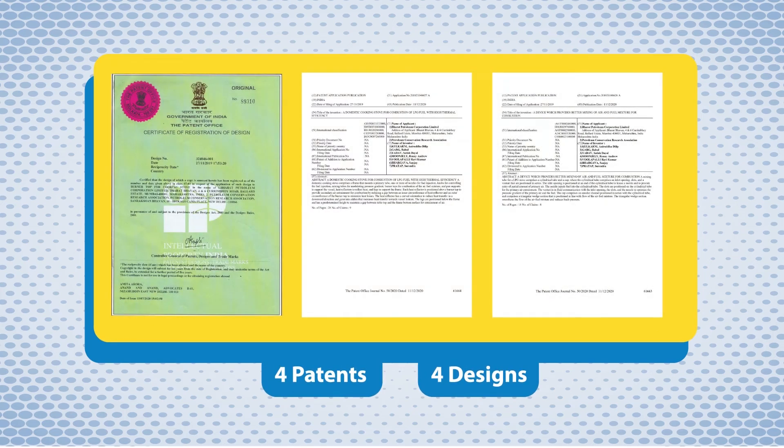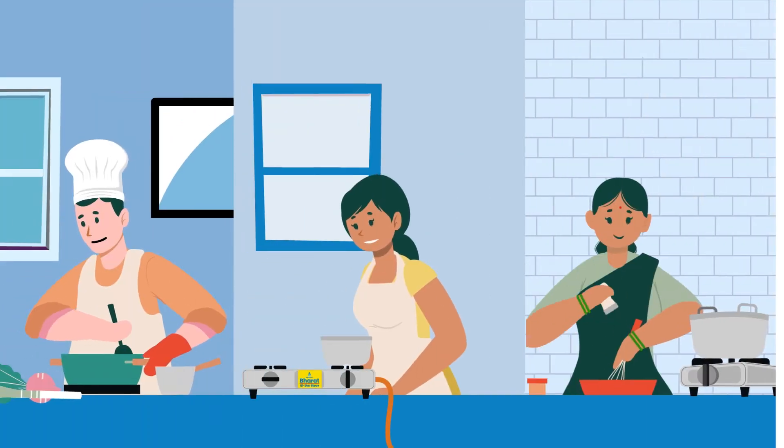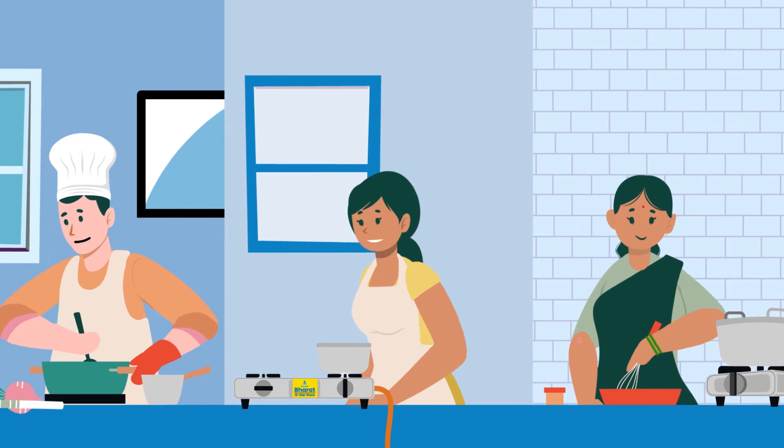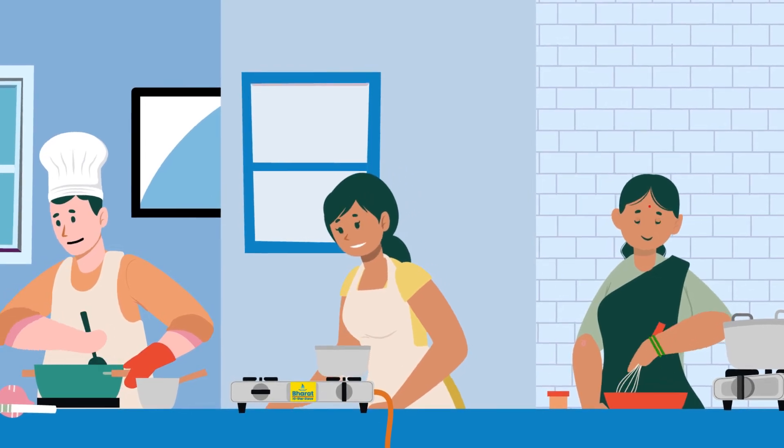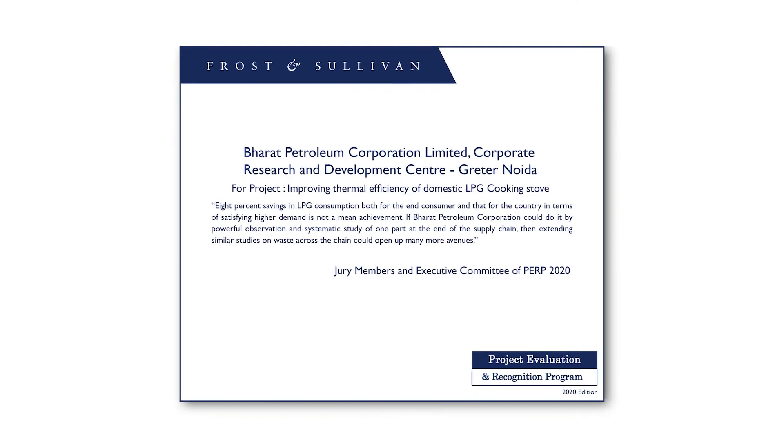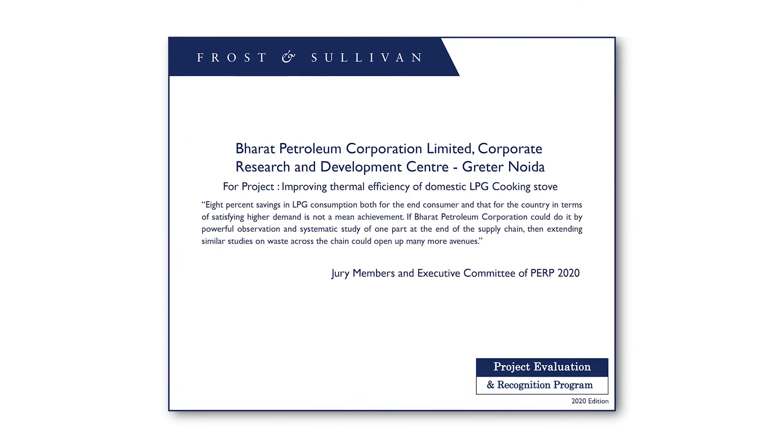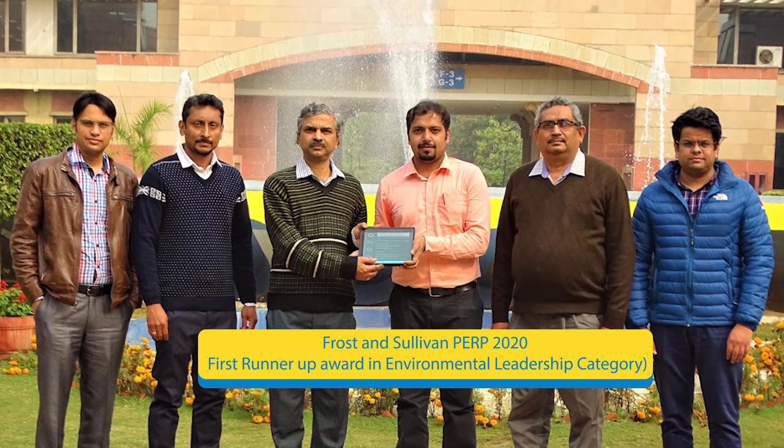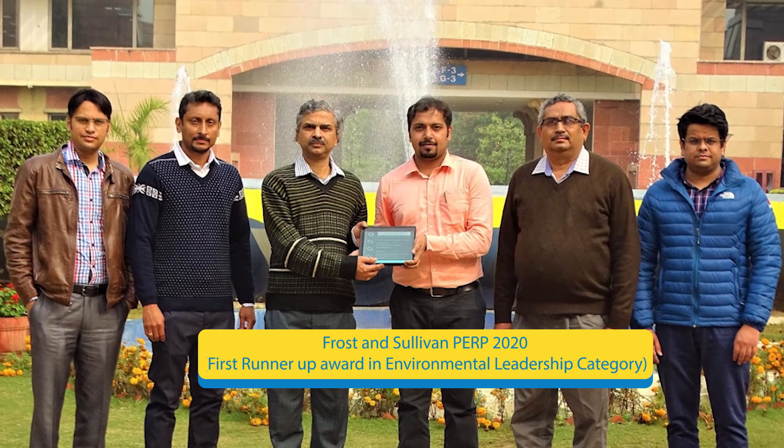Bharat High Star will soon be rolled out through six leading manufacturers which will be followed by an international launch. BPCL has received prestigious Frost and Sullivan PERP 2020 first runner-up award in environmental leadership category.